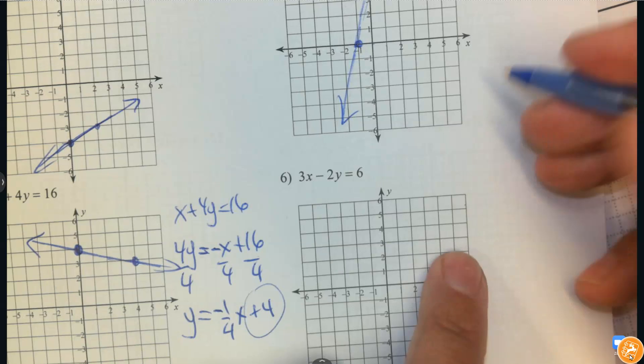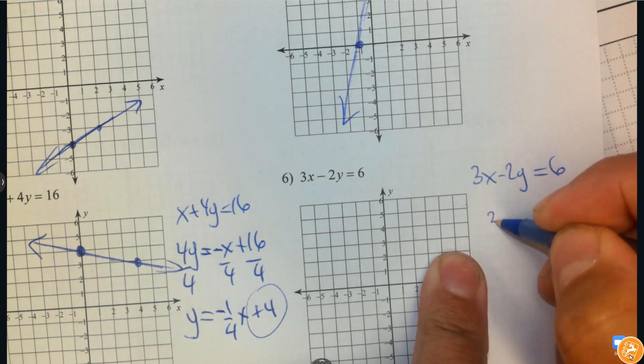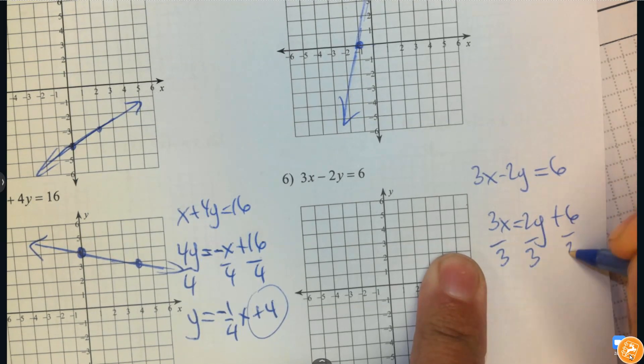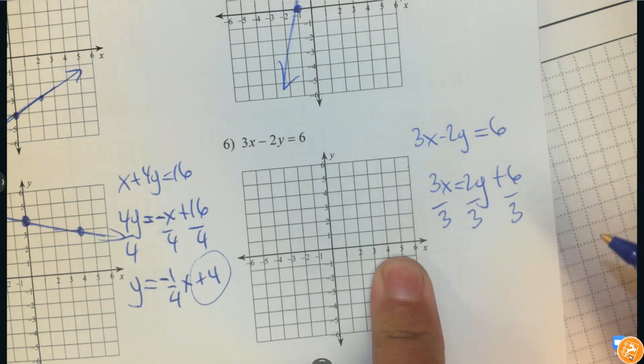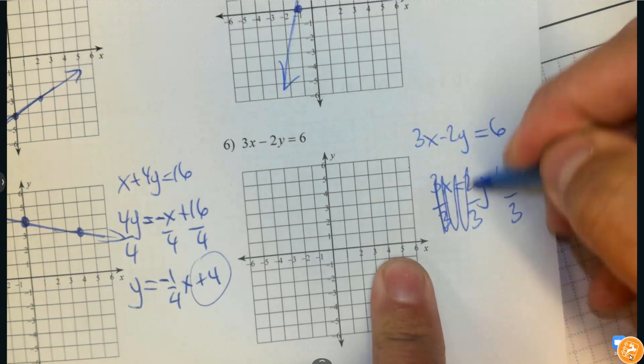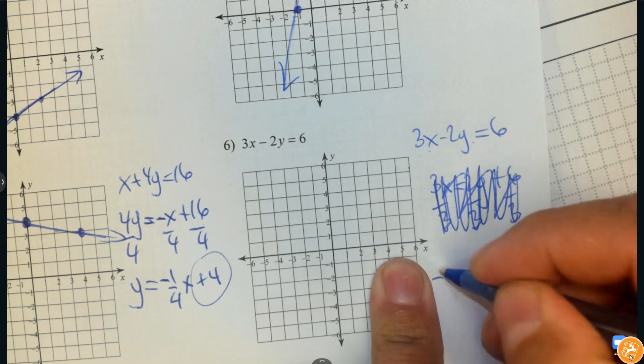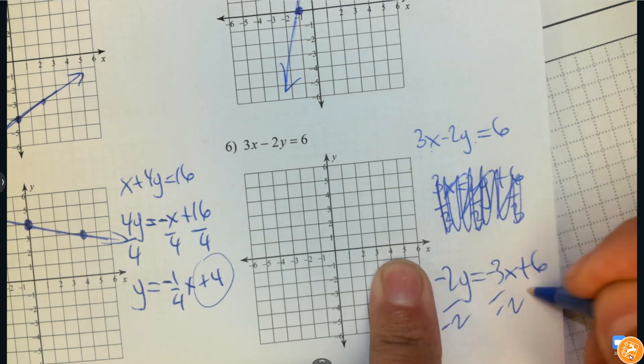Number 6. I'm going to change the way it looks. So I'm going to add 2y. And I'm going to divide everything by 3. Oh! I didn't mean to do that. But I can do that. Let's try that again. I'm not going to add. I'm going to subtract 3x.